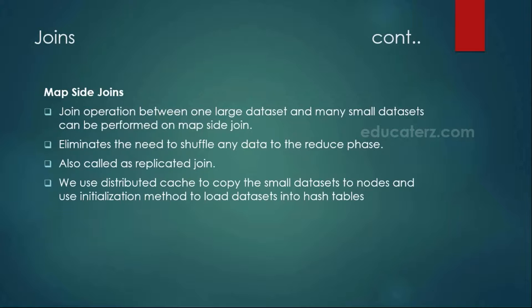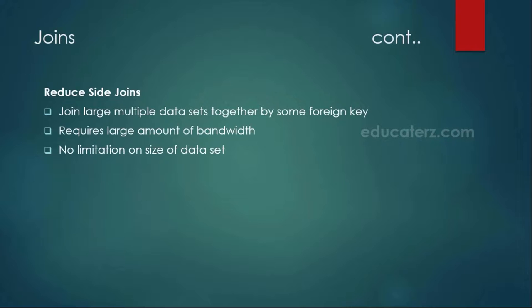In the case of the reducer-side join, whenever we are having all the files as larger data sets, they are combined together with the help of a foreign key. For example, suppose if you have an employee and a department table and you wanted to join these two tables, you will have the department ID in the employee table which refers to another table's column. In the reducer-side join, a large amount of bandwidth is required because all the mapper output results have to be passed via the shuffle and sort, and then the reducer phase is where the joining is going to be done. So a large amount of network bandwidth is required to process.